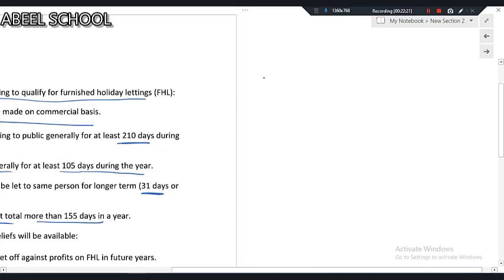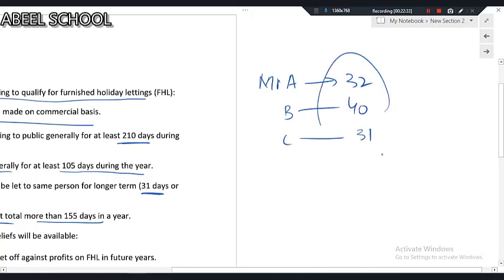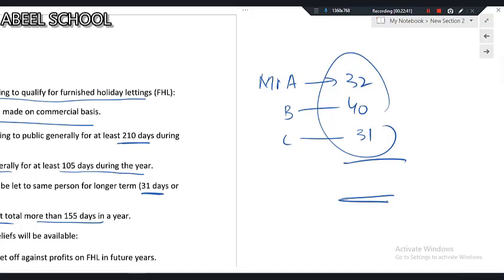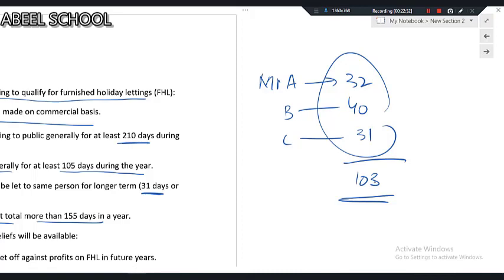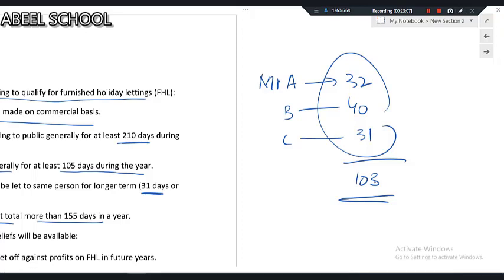Condition 4: The accommodation must not be let to the same person for longer than 31 days. If it is, those are called long-term occupations. If there are long-term occupations, the total of all such long-term lets must not exceed 155 days. For example, if the property is let to Mr. A for 32 days, Mr. B for 40 days, and Mr. C for 31 days, the total (103 days) must not exceed 155 days.